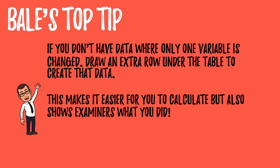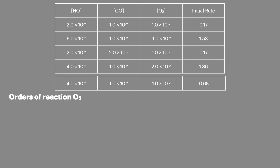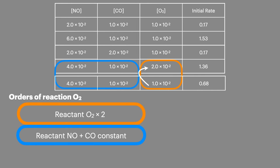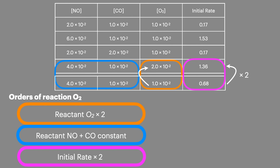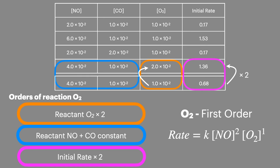Here's one of my exam top tips: if you don't get data where only one variable is changed, always calculate a new row underneath the table in the exam paper like we've just seen. This makes it easier for you to calculate but it also shows the examiner what you did and makes it much easier to score marks. So we're now going to work out the last order of reaction — for oxygen — by comparing the row I just made with the bottom row of the table. We can see that reactant O₂ has doubled, the two other concentrations have remained constant, and the initial rate has also doubled. This means that oxygen is first order, allowing me to complete the whole rate equation: nitrogen monoxide is second order and oxygen is first order.